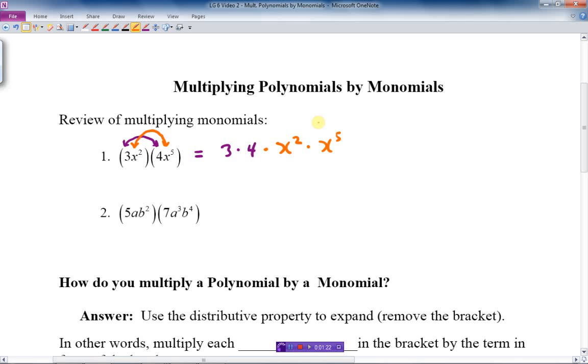Let's finish it off. 3 times 4, I do that part first, and I get 12. Then I do the x's: x squared times x to the fifth. Remember when I multiply things with the same base, I add the exponents. I get x to the 7. There's my answer to that question.